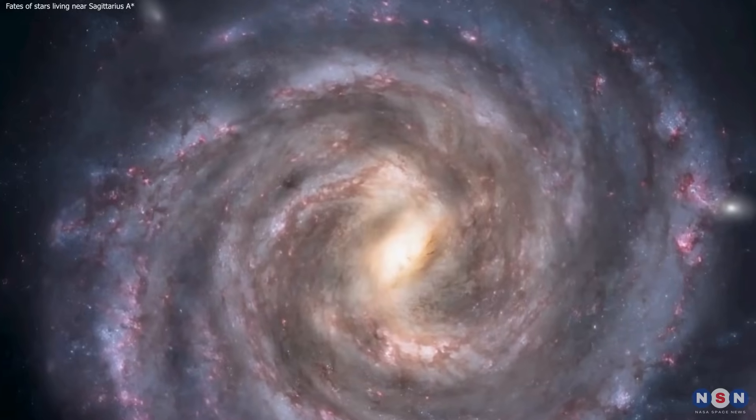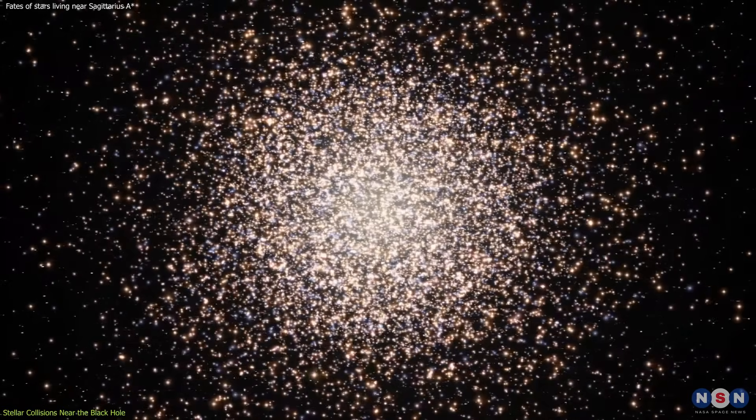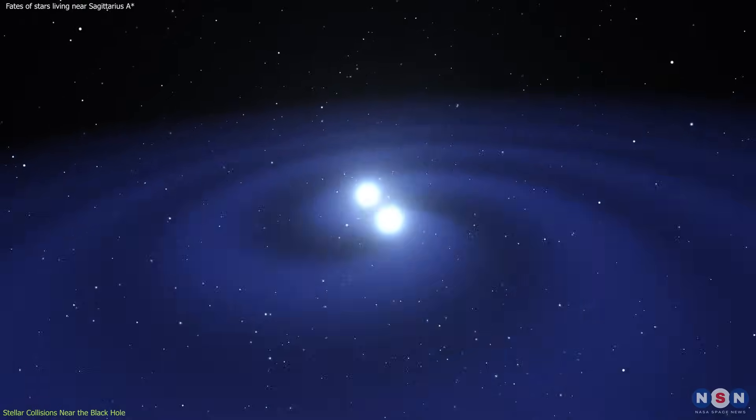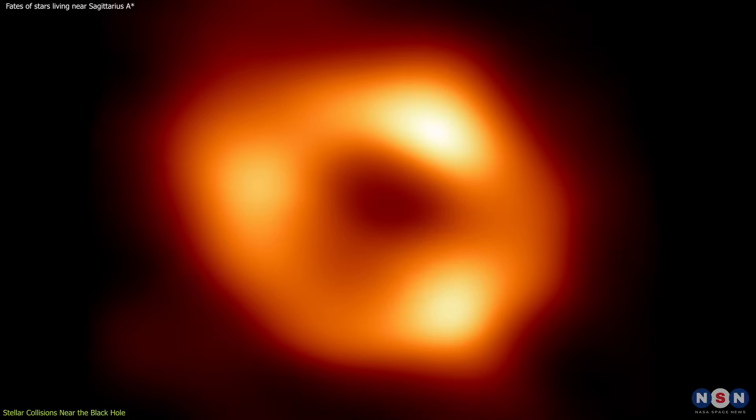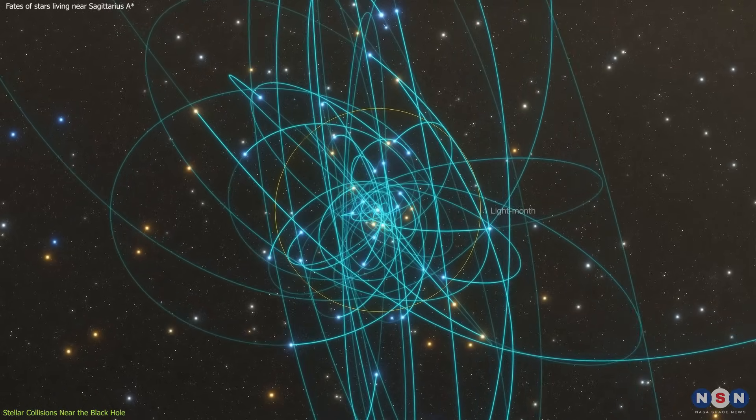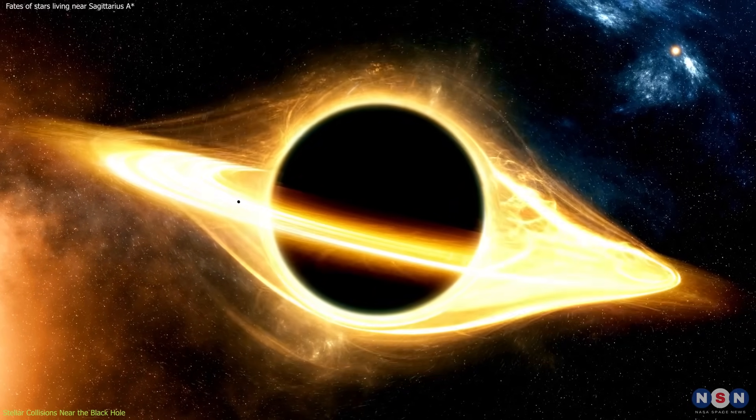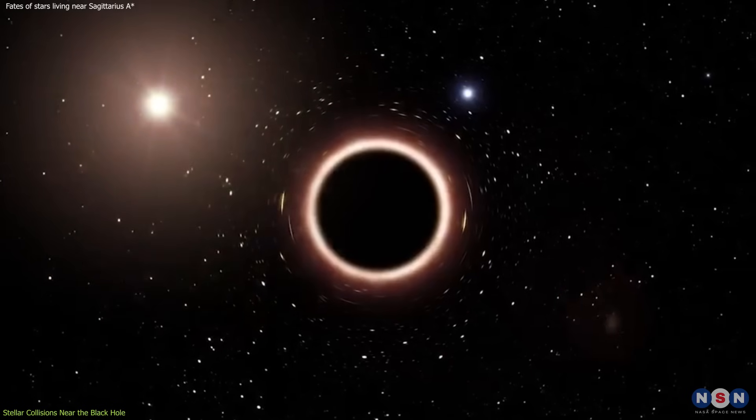Imagine the heart of our Milky Way galaxy as a bustling metropolis during rush hour, where stars, instead of cars, zip around at breakneck speeds. This region is home to the supermassive black hole, Sagittarius A-star, around which these stars perform a high-speed cosmic dance. The gravitational pull of the black hole is so immense that it accelerates stars to velocities reaching thousands of kilometers per second.